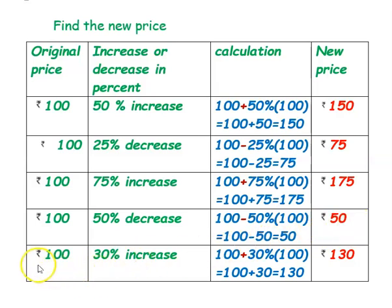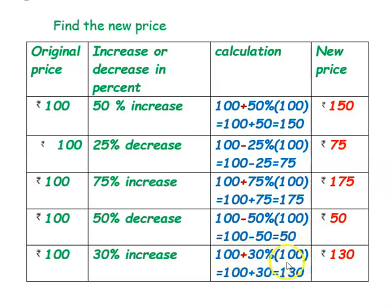The next example: original price is ₹100 and it is a 30% increase. If it is an increase, you add to the original price. So, 30% of 100 is 30. Therefore, 100 plus 30 equals ₹130. The new price is ₹130.